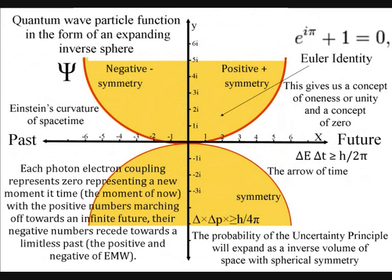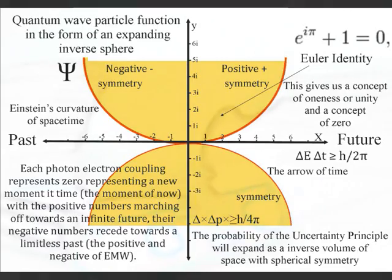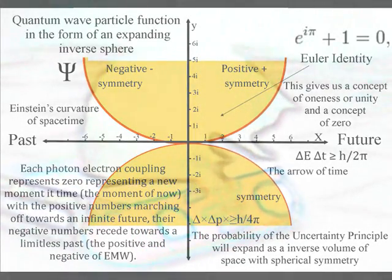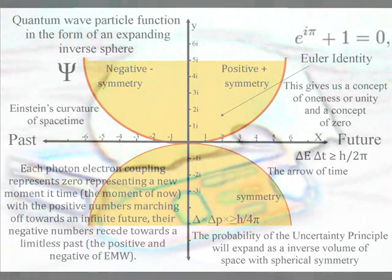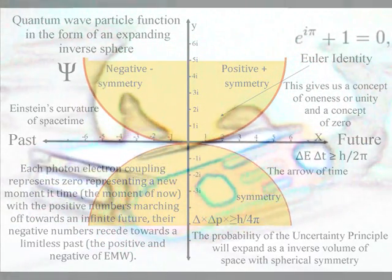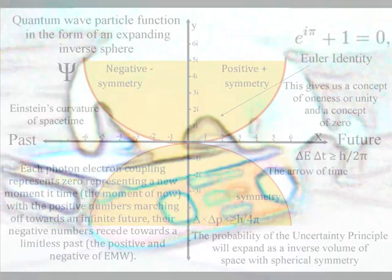I hope to base this theory on pure mathematics and therefore pure physics. I believe this can be done in just three dimensions and one variable, time. Each photon-electron coupling represents zero, representing a new moment in time, the moment of now, with the positive numbers marching off towards an infinite future and the negative numbers receding towards the limitless past, the positive and negative of electromagnetic waves.